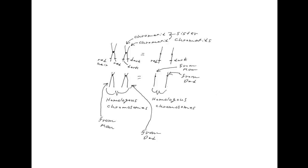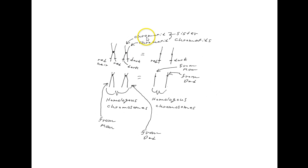Here's a rough diagram showing these ideas. We have this single, double-stranded chromosome — this is not a pair of chromosomes, this is one chromosome. It is double-stranded. Each individual strand is called a chromatid. The two strands of this double-stranded chromosome are called sister chromatids, and they are exact duplicates of each other. If we have a gene for dark hair on one chromatid, there is a gene for dark hair on the other chromatid.